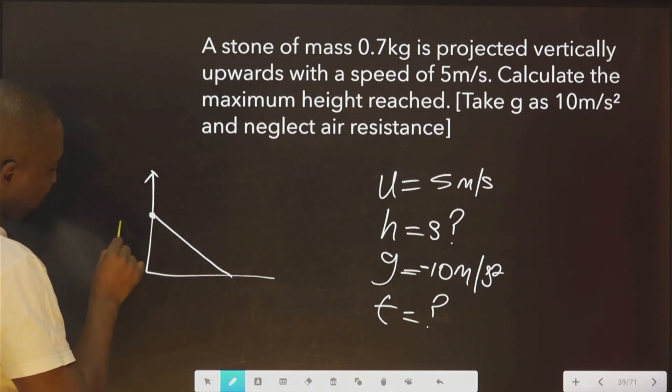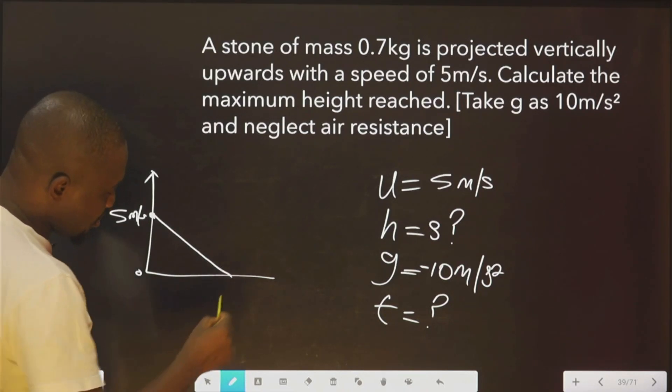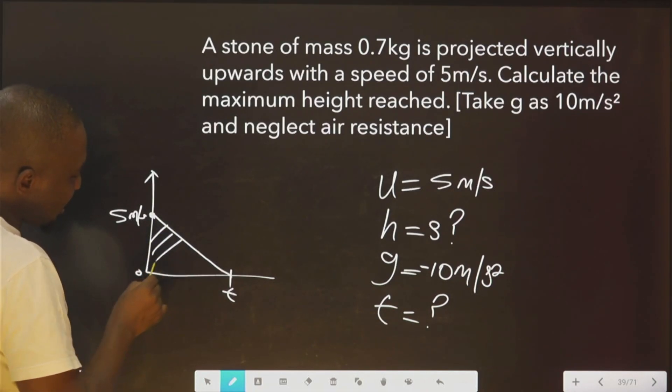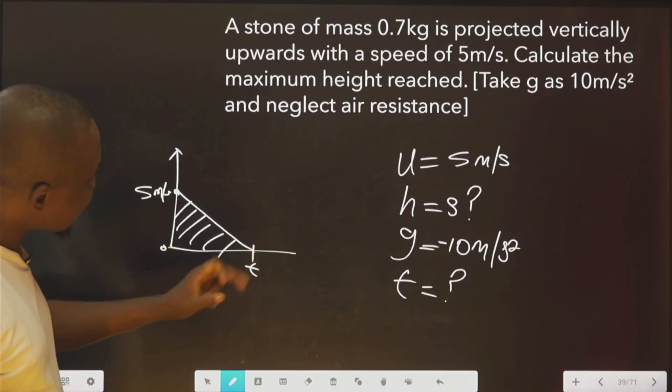Where did it start from? 5 meters per second. Start falling till it gets to 0 meters per second. Here is the time. This is the distance which is equivalent to this height. First of all, we need to know the time between this and this.